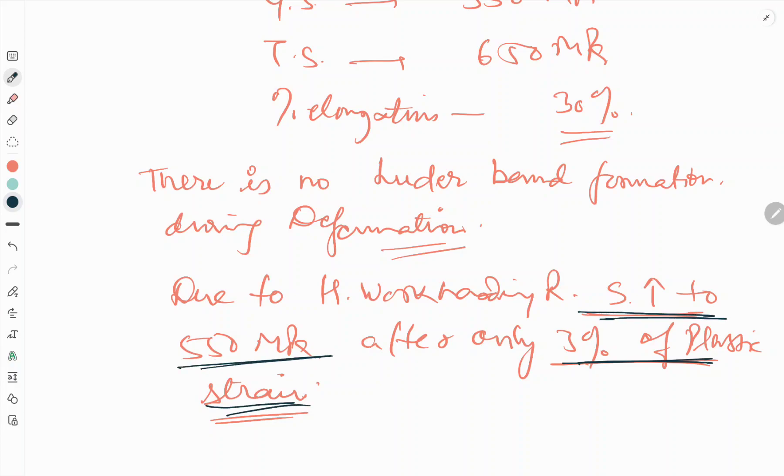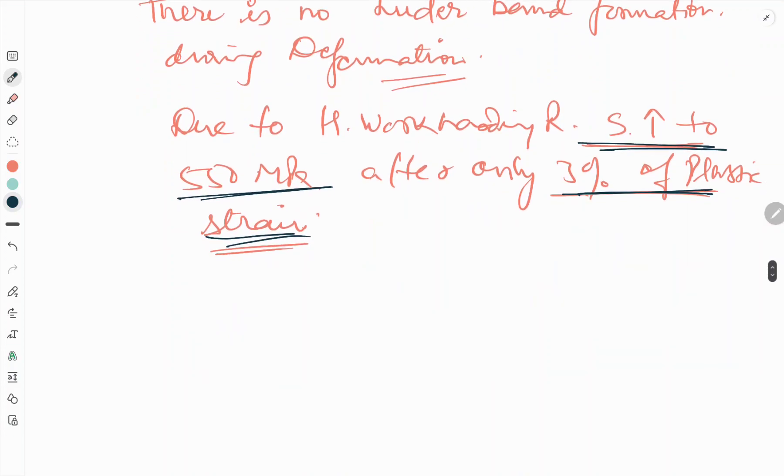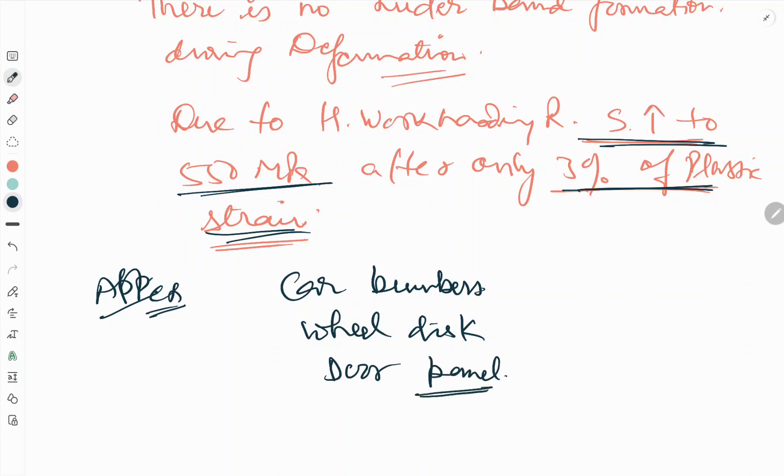Dual phase steels are used in various stamped automobile components such as car bumpers, wheel disks, and door panels.